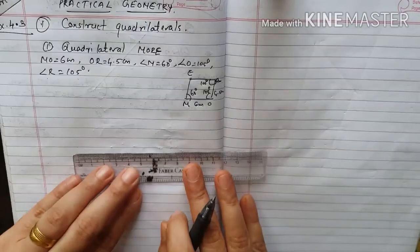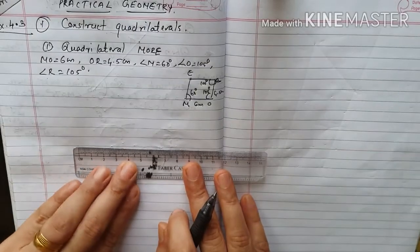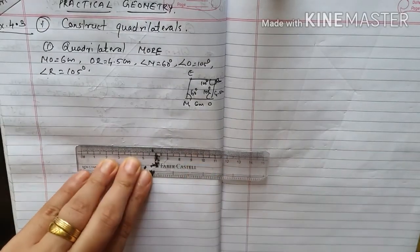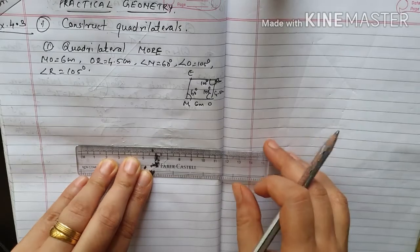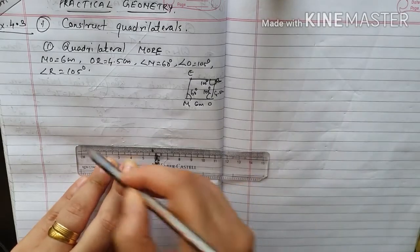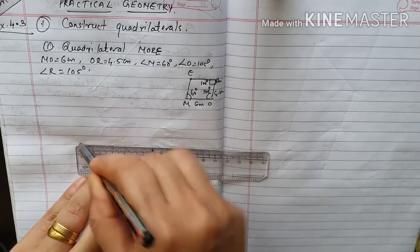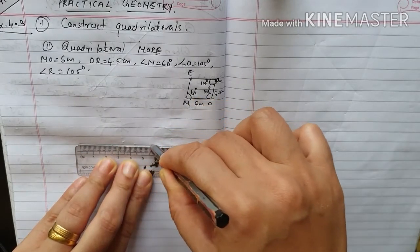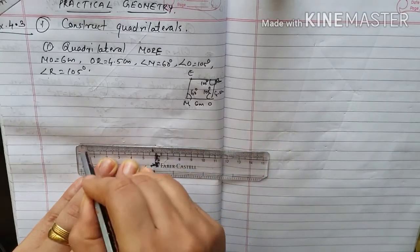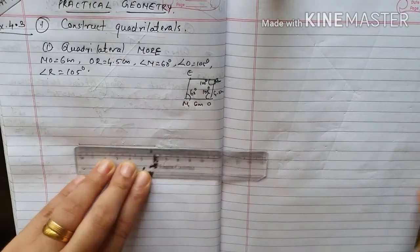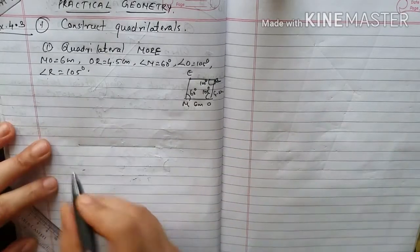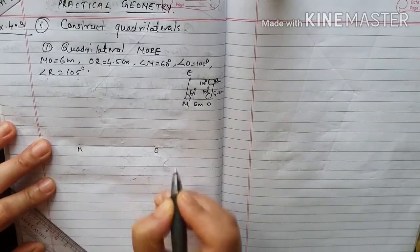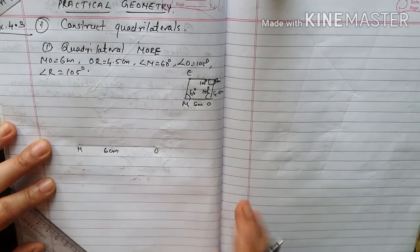First, draw MO equal to 6 centimeters. So we draw a line from 0 to 6 centimeters.